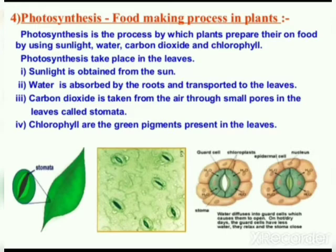Photosynthesis takes place in the leaves. Sunlight is obtained from the sun. Water is absorbed by the roots and transported to the leaves. Carbon dioxide is taken from the air through small pores in the leaves called stomata. Chlorophyll is the green pigment present in the leaves, as you can see in the diagram.